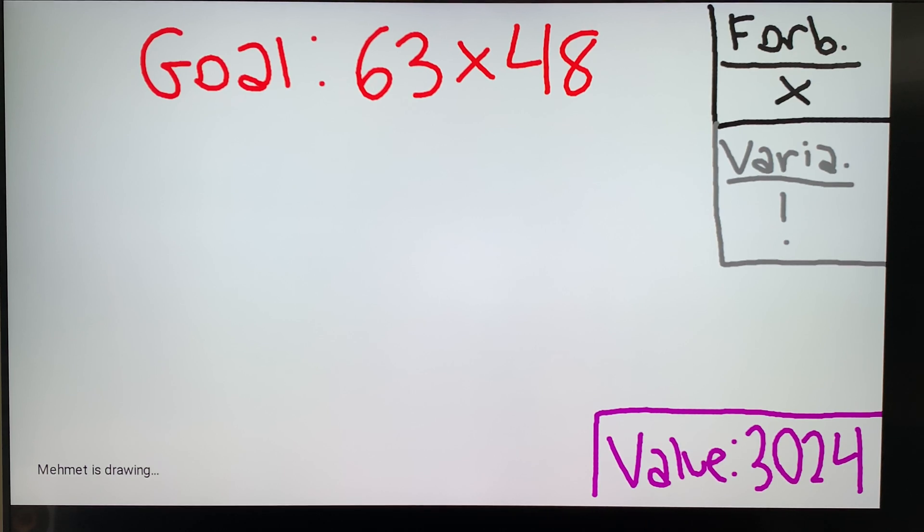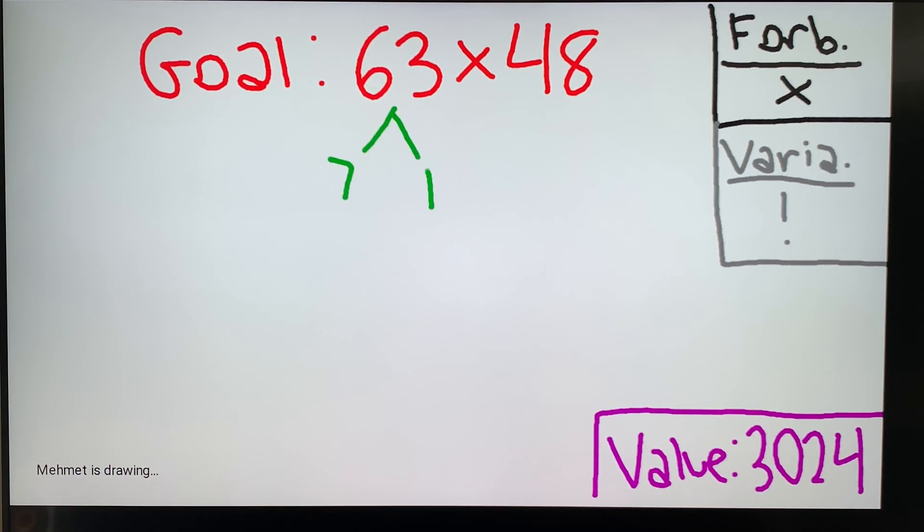Note that factorial has a built-in multiplication system into it, like 5 factorial is 5 times 4 times 3 times 2. It already has multiplication in it. So we're going to start off by factoring these numbers. 63 is equal to 7 times 9, and 48 is equal to 6 times 8.